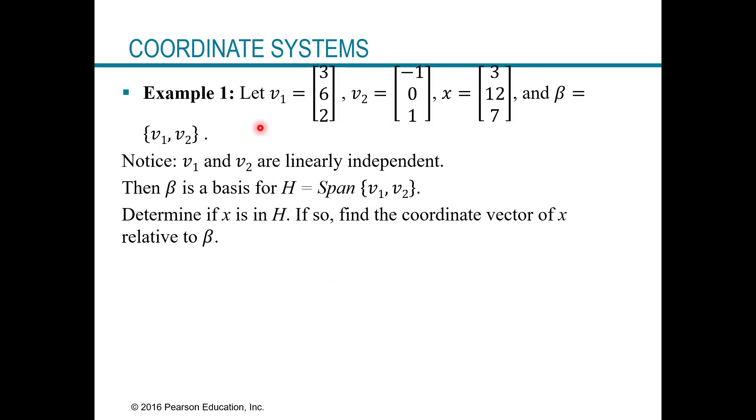So here's an example. Here we have three vectors, v1, v2, and x. And then B is the set containing v1 and v2. First notice that vectors v1 and v2 are linearly independent, and we could tell just by looking, because they're not multiples of each other, scalar multiples. And so by definition of a basis, then B is actually a basis for H, we're calling H the span of those vectors. Since it's a linearly independent set, the set containing v1 and v2, and when you span them, when you generate the space with them, that's the definition of a basis.